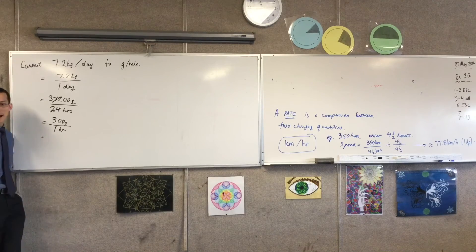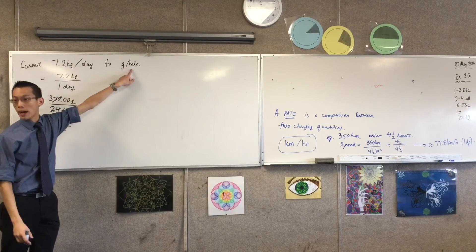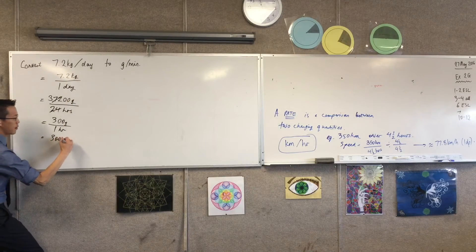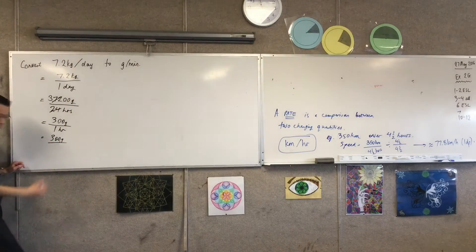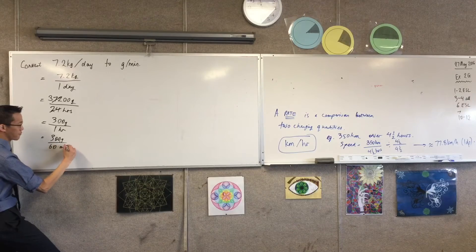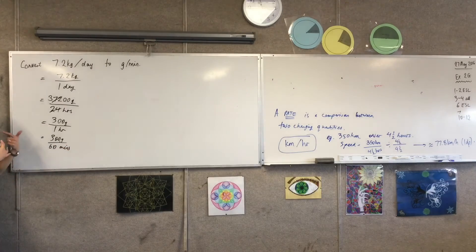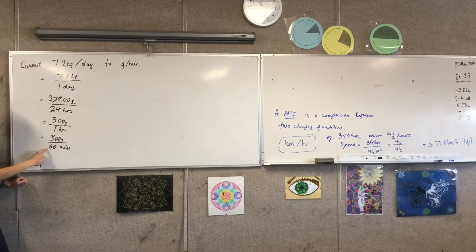And then I just climb down one more step. That will get me to the one I actually want, yeah? So 300 grams per how many minutes? 60. And so you can see I can cancel one more time. 300 divided by 60 is...